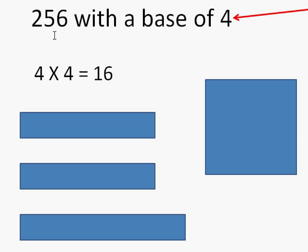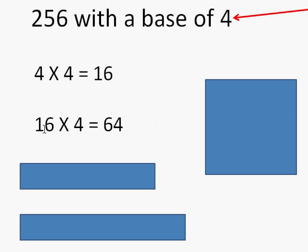4 times 4 doesn't give me this answer of 256 that I'm looking for. So I'm going to take that and multiply it by 4 again. 16 times 4 is 64. Still not the answer I'm looking for with 256.